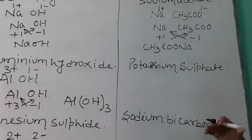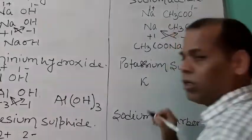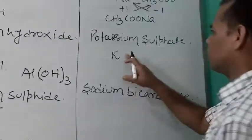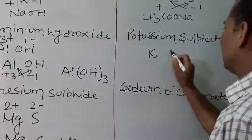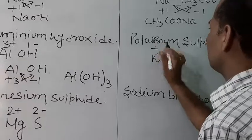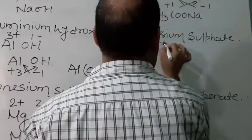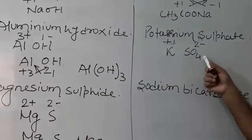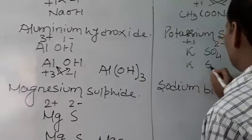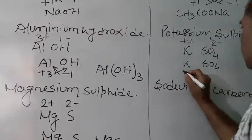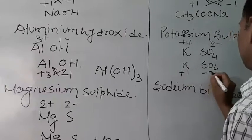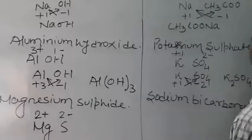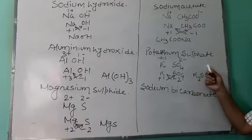Potassium sulfate. Potassium K has plus one; sulfate SO4 has minus two. Write K, SO4, plus one, minus two, and cross each other. The required formula for potassium sulfate is K2SO4.